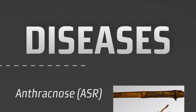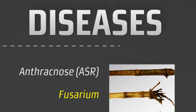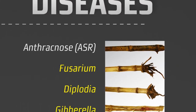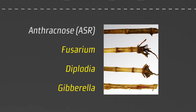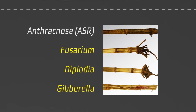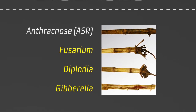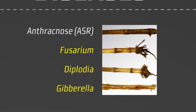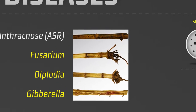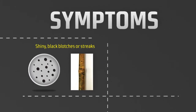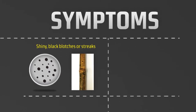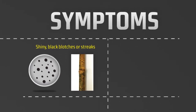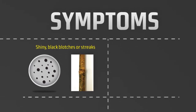There are four major stalk rot diseases: anthracnose, fusarium, diplodia, and gibberella. Of these diseases, anthracnose stalk rot, or ASR, is the most common. You can recognize ASR by its symptoms — shiny black blotches or streaks which develop on the stalk surface, especially on lower internodes.